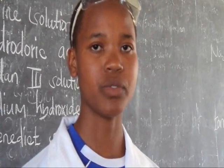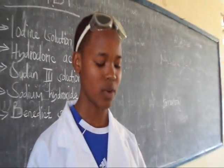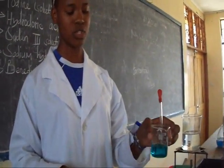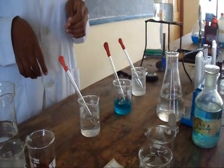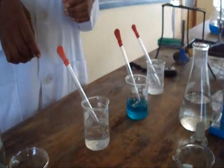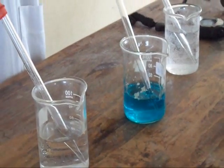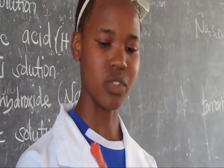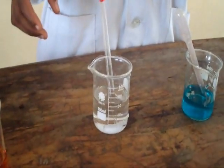Today we are going to conduct an experiment on food testing — we are going to test for the presence of reducing sugar in a food sample. When testing for reducing sugar, you must use Benedict's solution. If there is a presence of reducing sugar, the colour will change from blue to green, yellow, and finally brick red or orange. The first step is to take 2 cc of the food sample which contains reducing sugar.